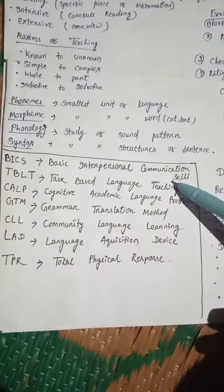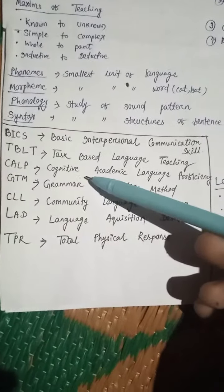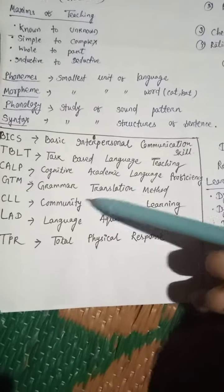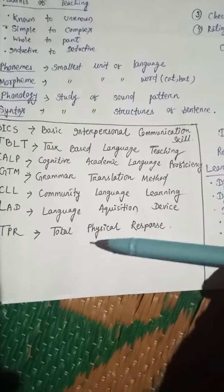BICS, basic interpersonal communication skill. TBLT, task-based language teaching. CALP, cognitive academic language proficiency. GTM, grammar translation method. CLL, community language learning. LAD, language acquisition device. TPR, total physical response.